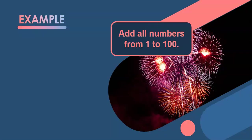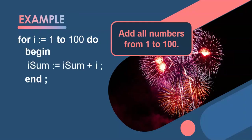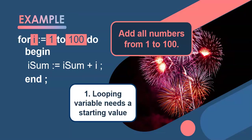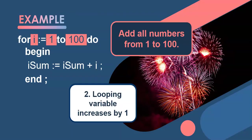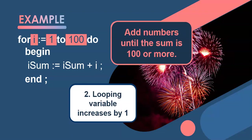Another example: if we want to add all the numbers from 1 to 100, we know how many times to do this loop — so we use a for loop. With a for loop, we have a sum variable: iSum = iSum + r. But when we want to add numbers until the sum is 100 or more, we don't know how many times to repeat, so we need a conditional loop. We'll do the same thing: iSum = iSum + r, initialize iSum to 0.